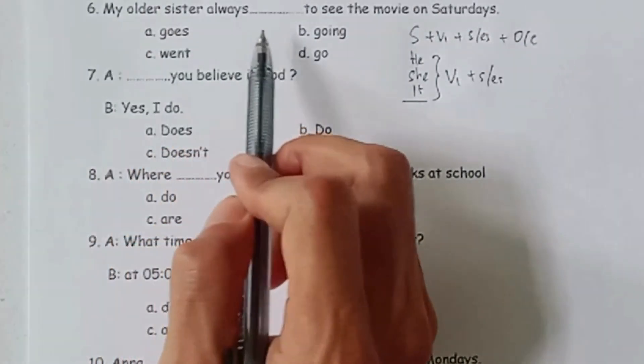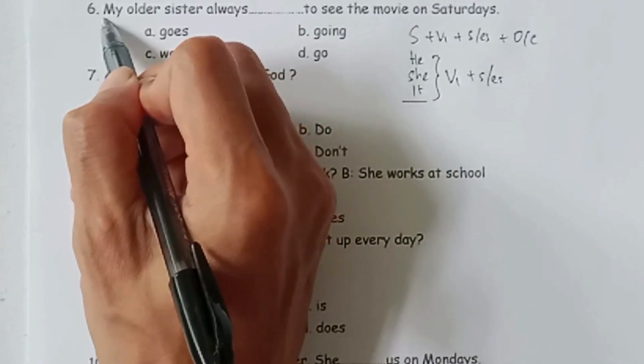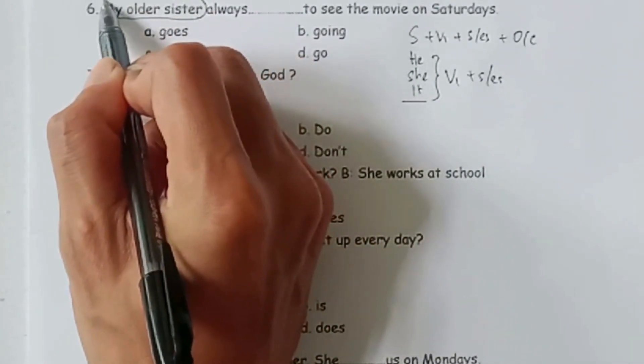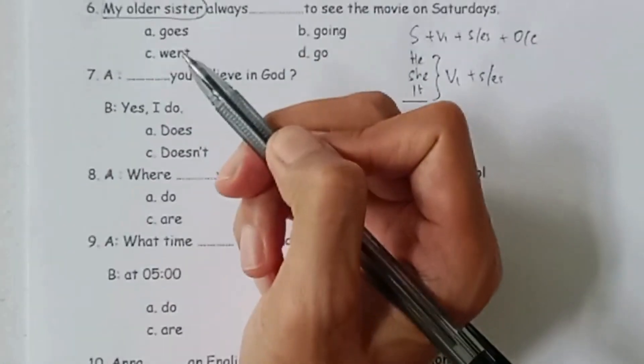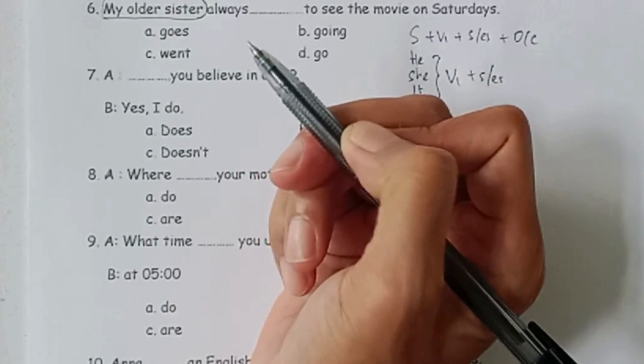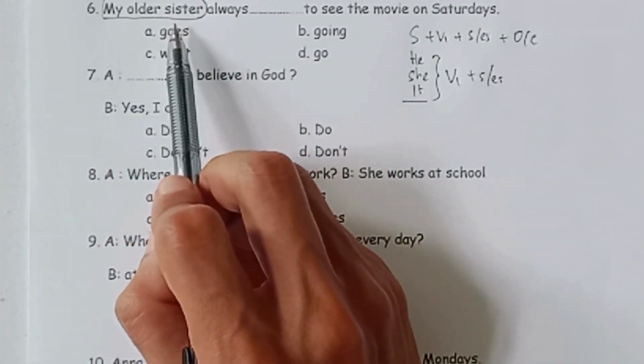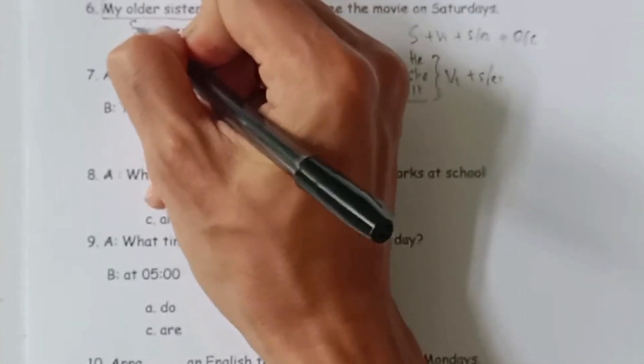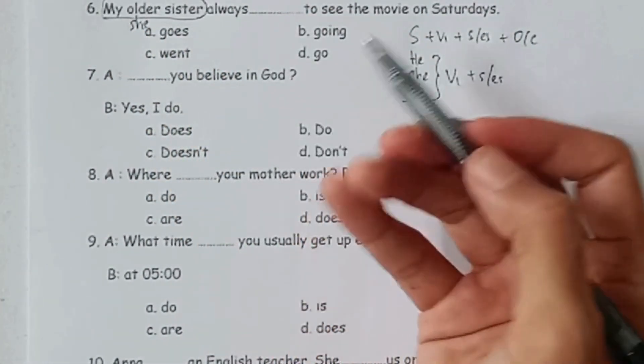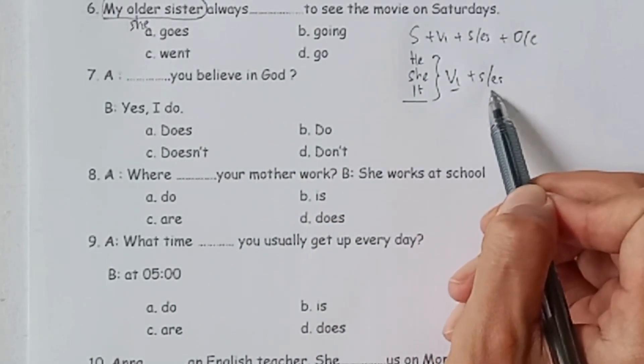Sekarang kita lihat. My older sister always titik-titik to see the movie on Saturdays. Nah, my older sister ini agak panjang subjeknya, tapi sebenarnya my older sister kalau kita bahas Indonesia, ya ini kakak perempuan saya. Jadi kakak perempuan dalam bahasa Inggris kita bisa ubah menjadi kata she. Berarti kalau dia she, maka kata kerjanya harus ditambahkan S ataupun ES.